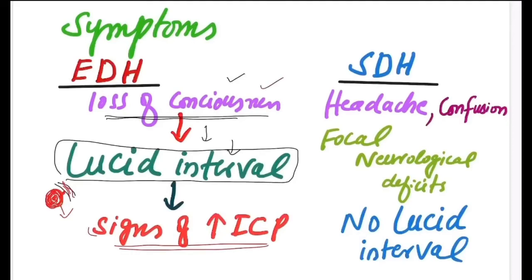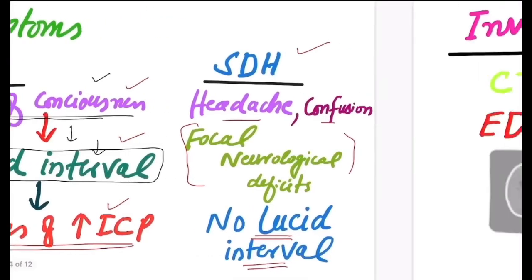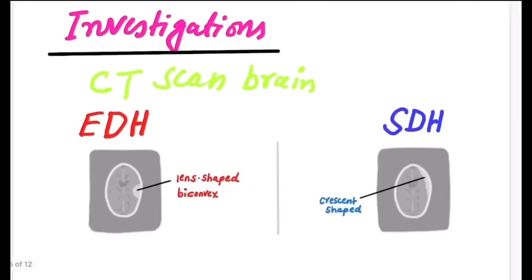When the hematoma reaches a significant size, it exerts pressure on the brain and signs of raised intracranial pressure develop. So in extradural hematoma: loss of consciousness, then a lucid interval, then signs of raised intracranial pressure. In subdural hematoma, the patient presents with headache, confusion, and focal neurological deficit, but there is no lucid interval.